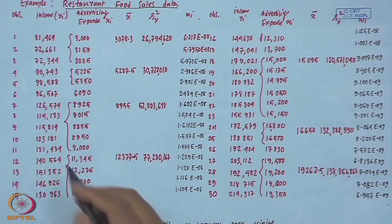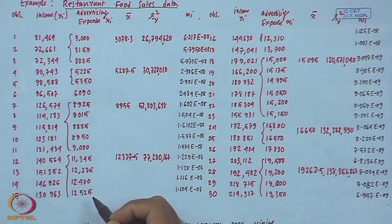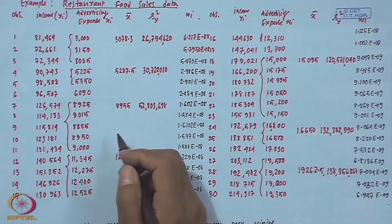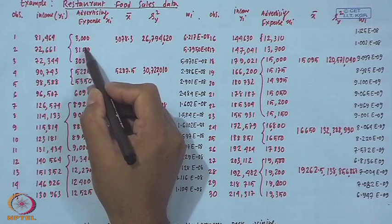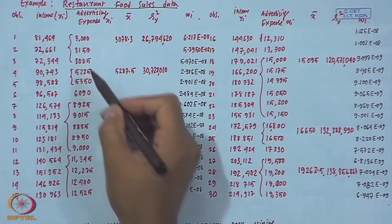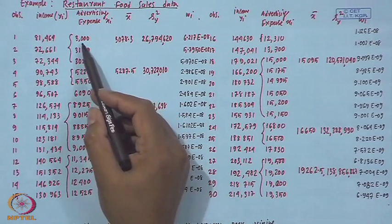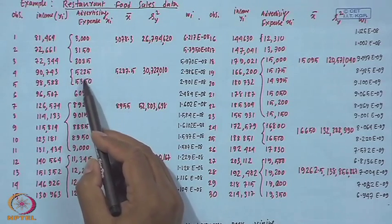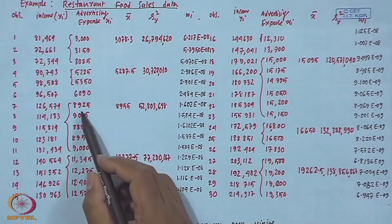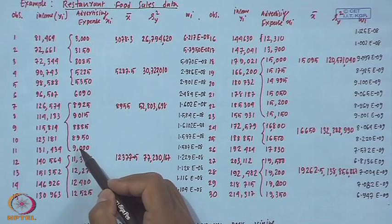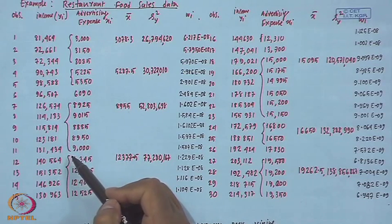σ_i² is the population variance from which the i-th observation comes. Looking at the data — income and advertising cost — we can see some x values are nearly equal, so we put them into one cluster. For example, three x values that are near equal form one cluster; two near-equal values form another cluster; five near-equal values form another cluster, and so on.